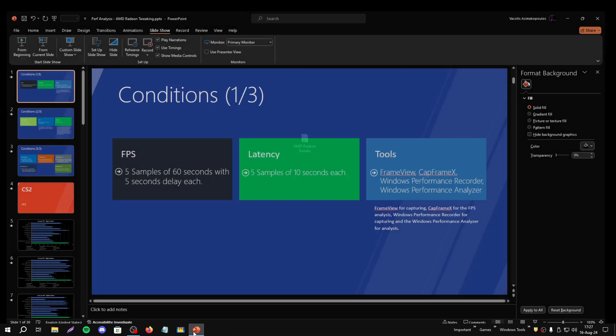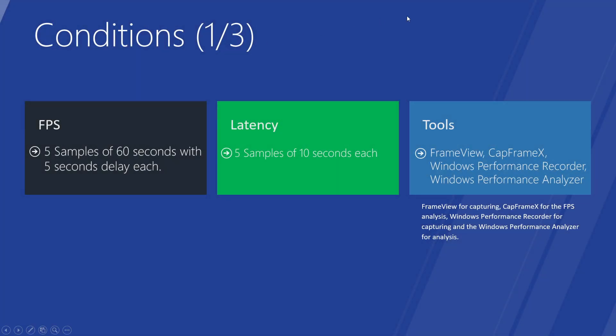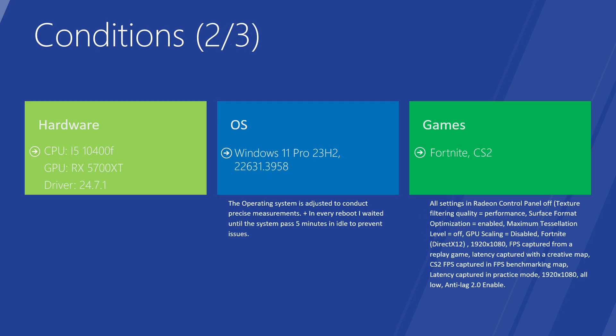So we can move now to the practical part. Let's see the conditions that I used for my tests. As always, I did 5 samples of 60 seconds with 5 seconds delay each for FPS, and for latency, 5 samples of 10 seconds each. The same tools as in the previous video, the same hardware with the latest AMD driver, and Windows 11 Pro. I should also mention that in every reboot I waited until the system had been idle for 5 minutes to prevent any issues.